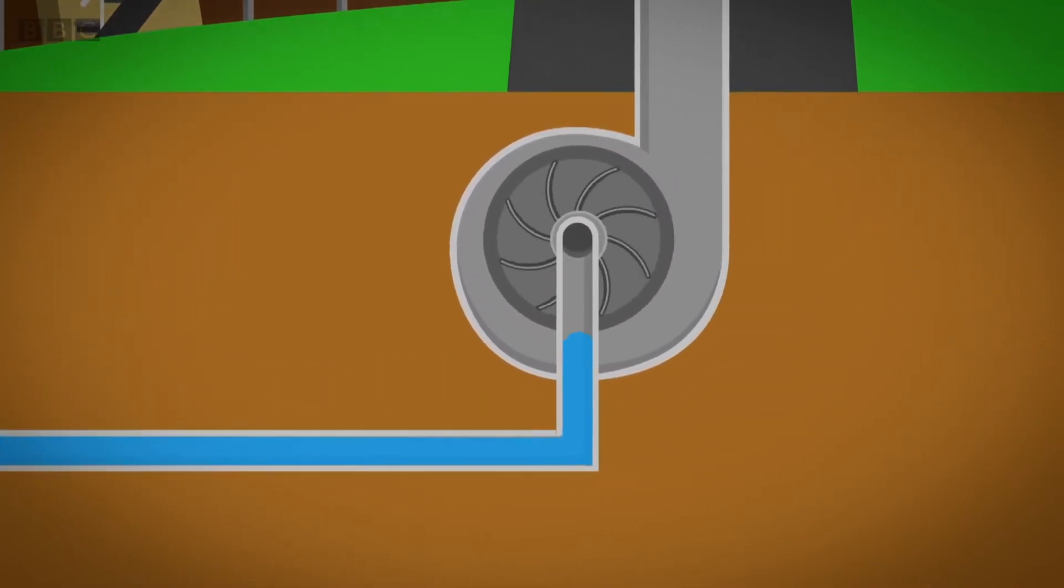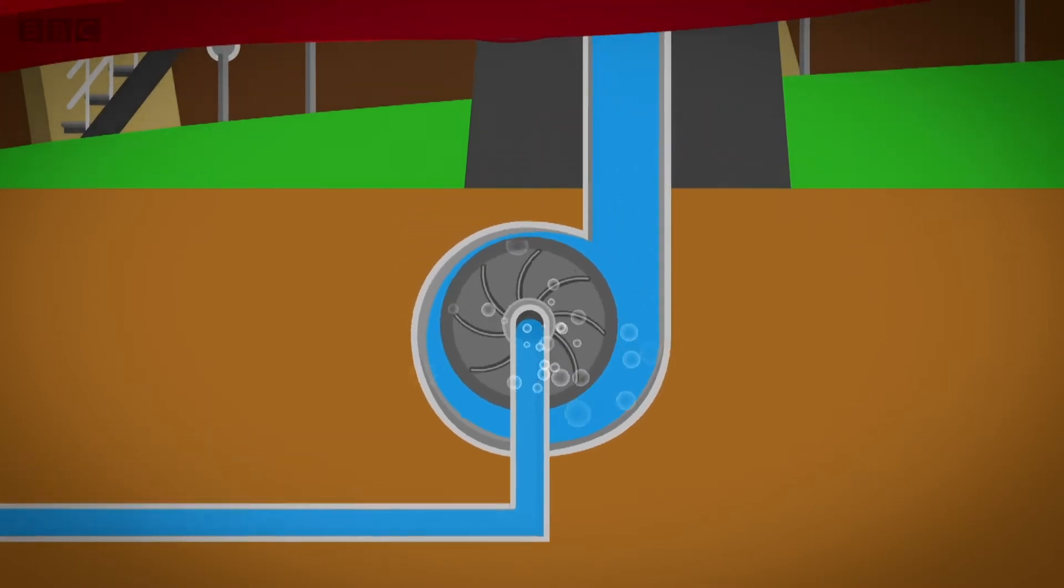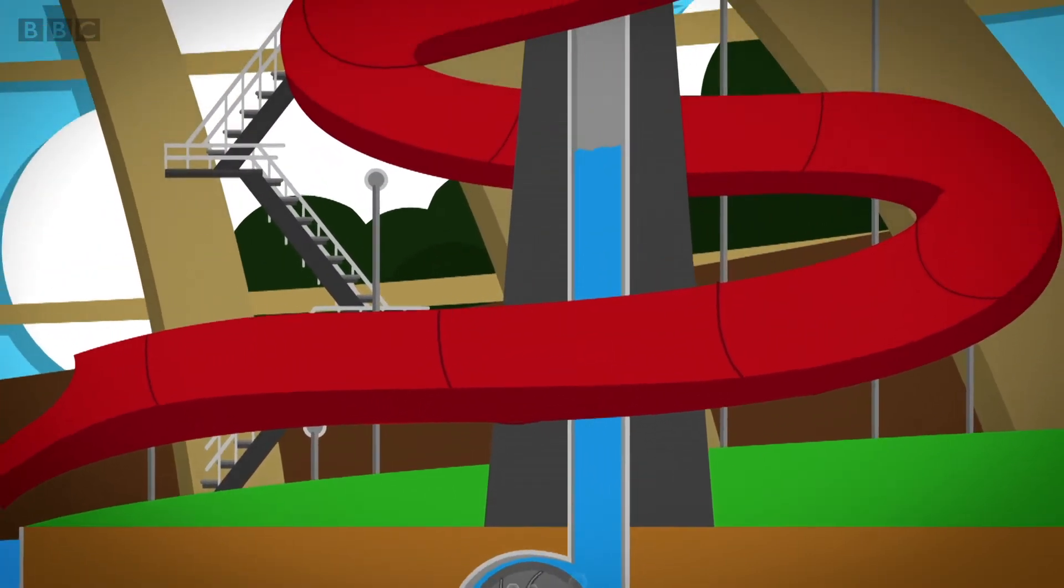The water travels along the pipe to a big spinning wheel. The wheel spins the water around very fast and pushes it up another pipe.